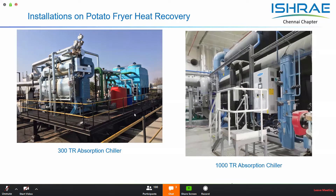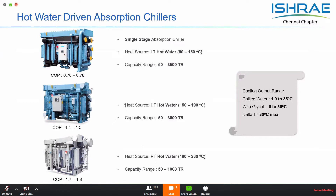Hot water can also be used as a heat source for an absorption unit. Hot water is available at various temperatures; when temperatures are 80 degrees Celsius and above, we can use a single-stage absorption chiller to generate cooling. Capacity ranges can be from 15 to 3,500 tons. Importantly, today there are technologies available that can utilize water at temperatures lower than 80 degrees Celsius as well.